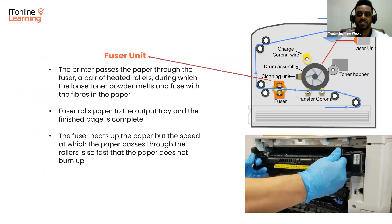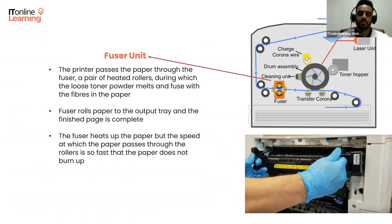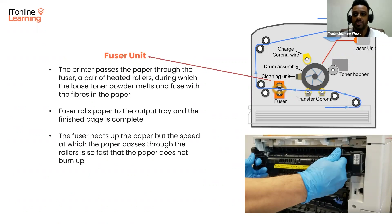Finally, the printer passes the paper to the fuser — a pair of heated rollers — during which the loose toner powder melts and fuses into the fibers in the paper. The fuser rolls the paper to the output tray and you have your finished page. The fuser also heats up the paper itself, which is why pages are always hot when they come out of a printer.